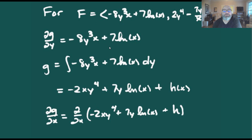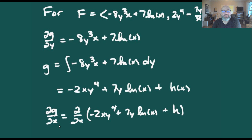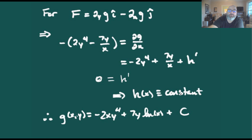The partial with respect to y is our first component, so we set that equal to minus eight y cubed x plus seven natural log of x. We integrate with respect to y, which gives us minus two x y to the fourth plus seven y natural log of x plus an arbitrary function of the remaining variable x, which we call h(x).